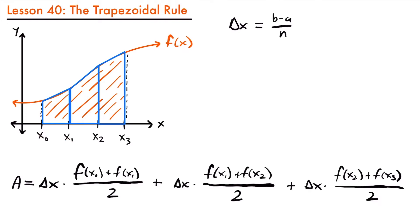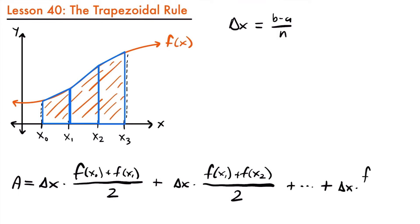This is not in its simplest form. In the general case with n trapezoids, the last trapezoid's area is delta x times (f(x_{n-1}) plus f(x_n)) divided by 2. We can then simplify by noting that each term has a common factor of delta x divided by 2. Pulling that factor out of each term, we get: delta x divided by 2 times [(f(x₀) plus f(x₁)) plus (f(x₁) plus f(x₂)) plus ... plus (f(x_{n-1}) plus f(x_n))].